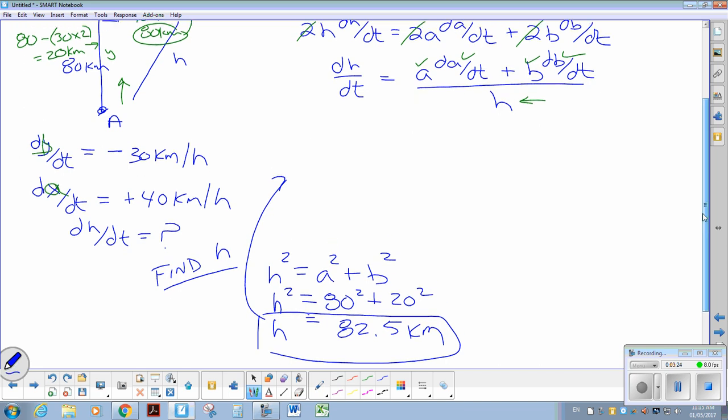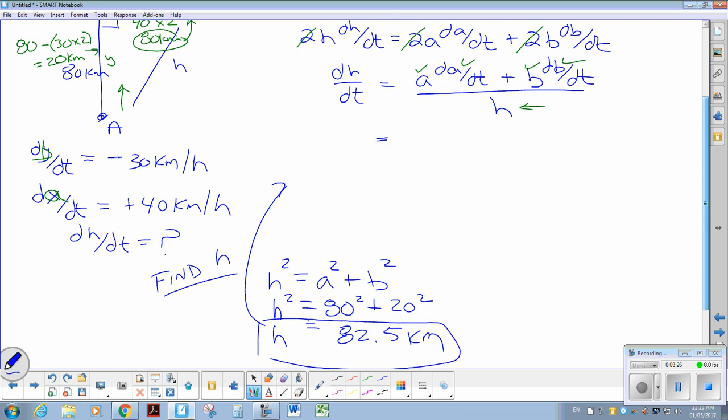Let me finish the question. So I know my A value is 80, and it's increasing in length, so it would be times 40 plus my B value is 20. But that side's shrinking, so it'll be negative 30 over the height, which is 82.5. Cleaning that up. So 80 times 40 plus 20 times negative 30, divide that by 82.5. We're going to be pretty close to what they get for an answer.